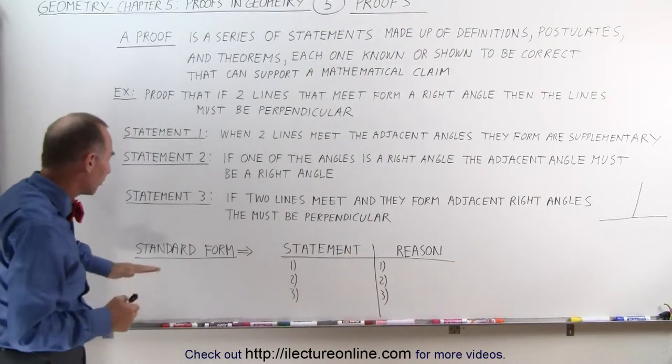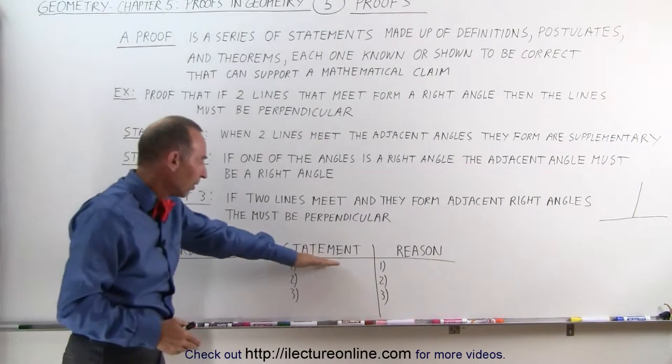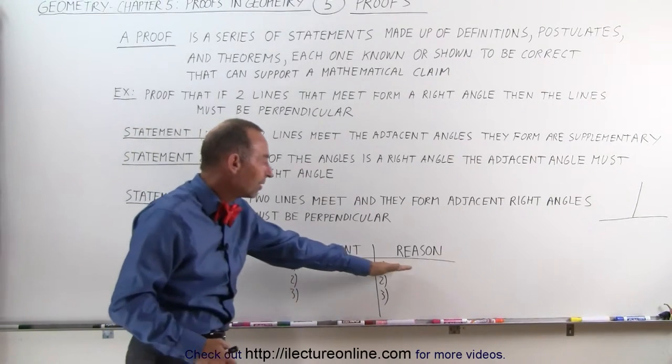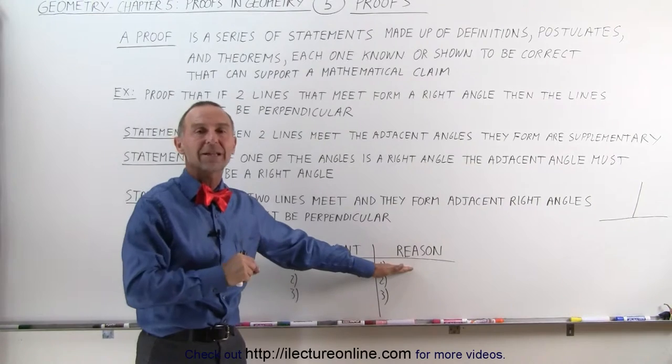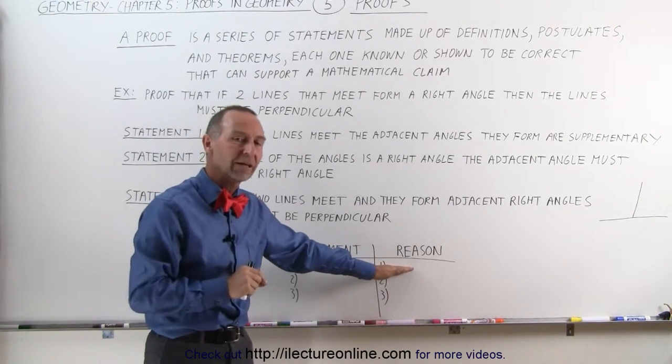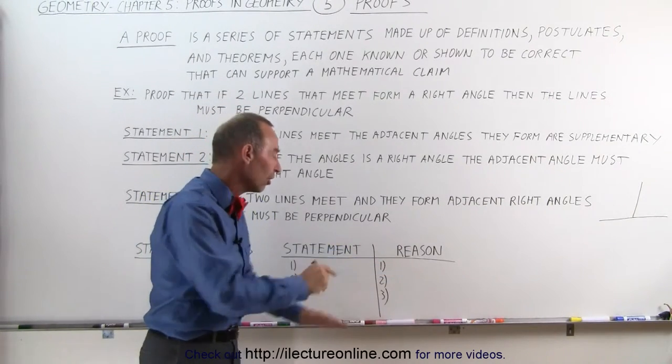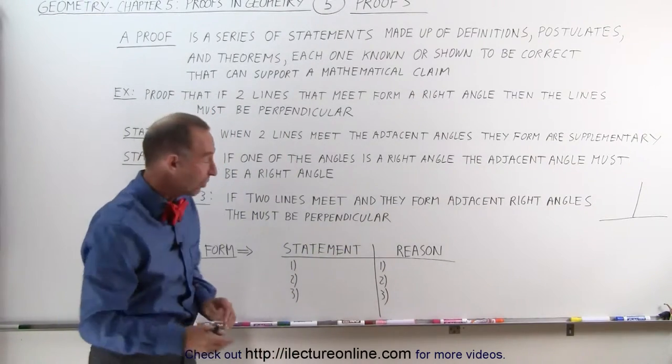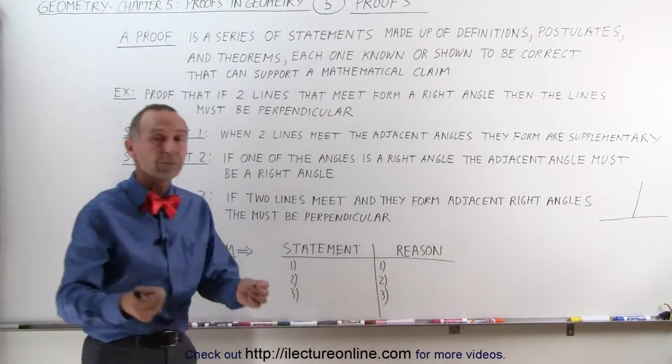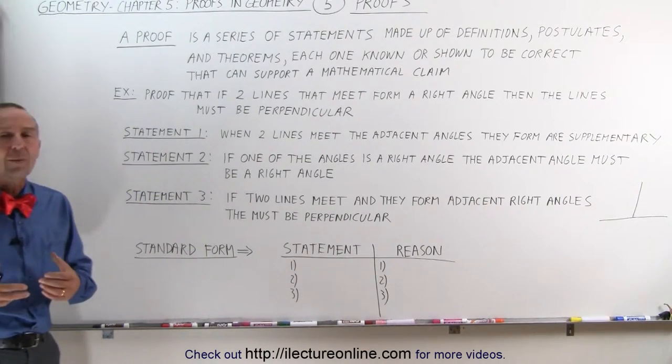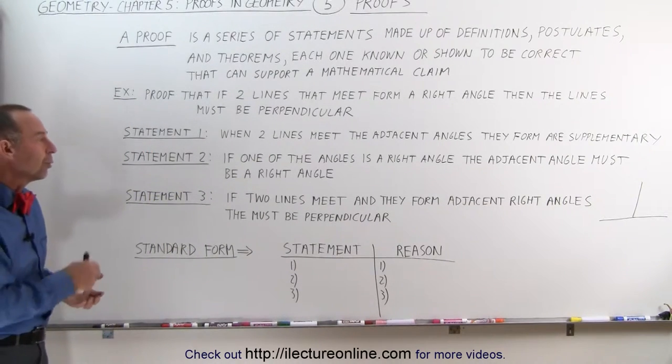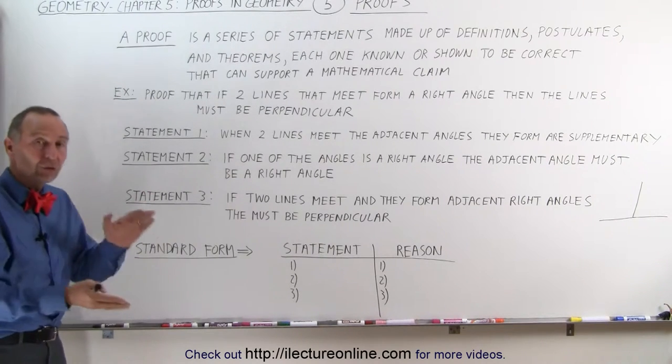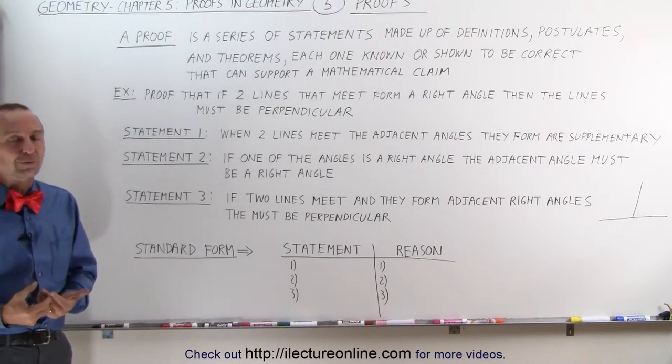The standard format of a proof is that we have a series of statements. And then, for each statement we make, we tell you why we can make that statement. Which postulate is that? Which definition allows us to make that statement? And so, if we have good reasons for making those statements together, we can then prove something. And that's how we prove things in geometry. We come up with statements. We can give you the reasons for those statements. And then, together, as a group, they form a proof.